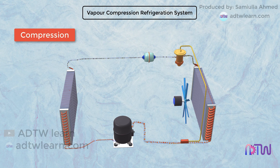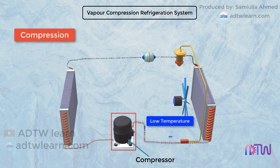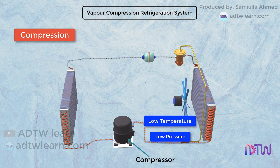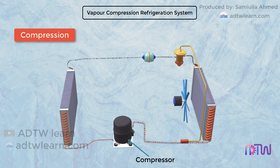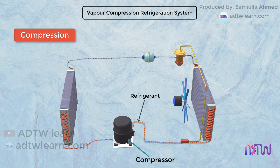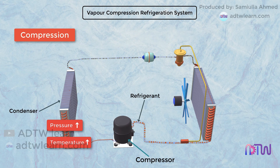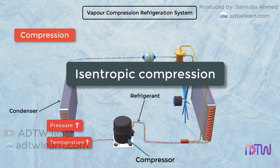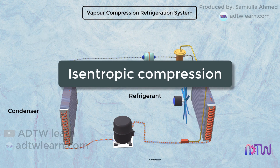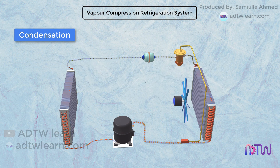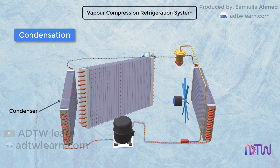The refrigerant enters the compressor at low temperature and low pressure. The refrigerant entering the compressor is in a gaseous state. The function of the compressor is to increase the pressure and temperature of the refrigerant. The refrigerant leaving the compressor has high temperature and high pressure. This high-temperature, high-pressure refrigerant then enters the condenser. Therefore, we call this an isentropic compression process.